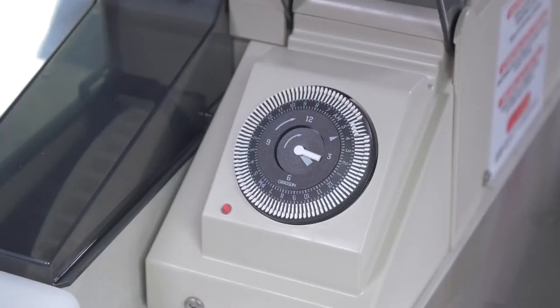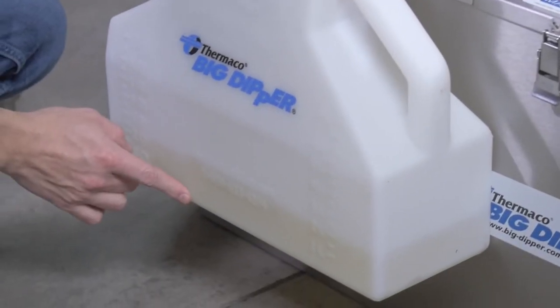To confirm that your Big Dipper is skimming correctly, allow the unit to run at the current setting for a few days. After a skim cycle, check the grease collector and observe the amount of water in grease.